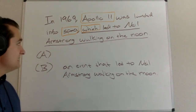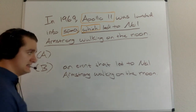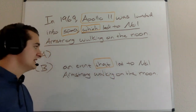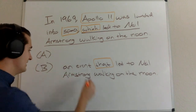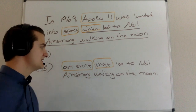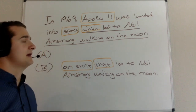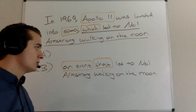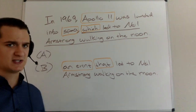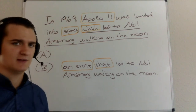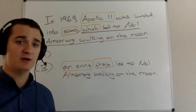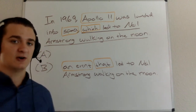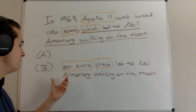Looking at B: 'Apollo 11 was launched into space, an event that led to Neil Armstrong walking on the moon.' Here I have 'that' functioning as a modifier. What would 'that' modify? An event. What event led to Neil Armstrong walking on the moon? The event of Apollo 11 being launched into space. So B much more clearly expresses the sentence logically — space didn't lead to Neil Armstrong walking on the moon, a spacecraft did not lead to that, but the event of that spacecraft being launched into space did. B is the correct answer.